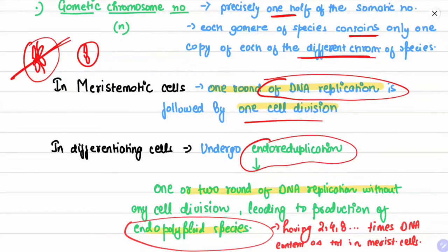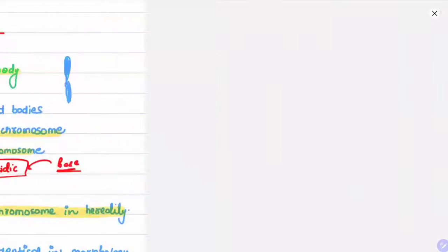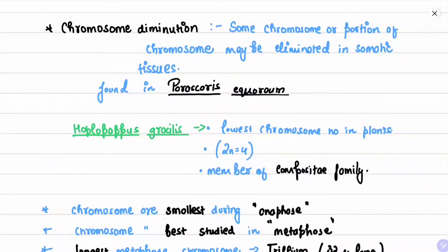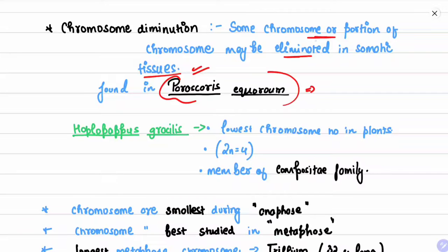Chromosome diminution is when some chromosomes or portions of chromosomes are eliminated in somatic tissue. An important example is Parascaris equorum. If you want to go into more depth on chromosome diminution, you can search the internet for more information.